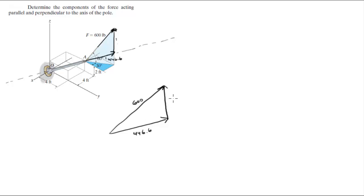And this is the perpendicular force. This is a right triangle, so you can use the Pythagorean theorem, which says that 446.6 squared plus the perpendicular value squared equals 600 squared. If you solve for the perpendicular value, you get 400.7. And this is the final answer for the force going along the axis of the pole.